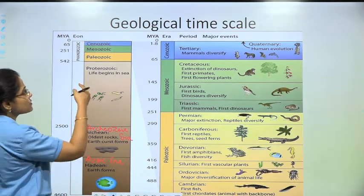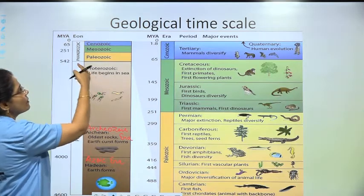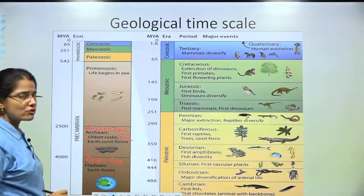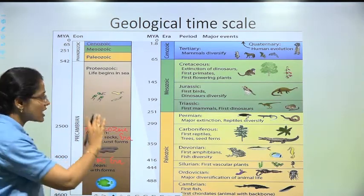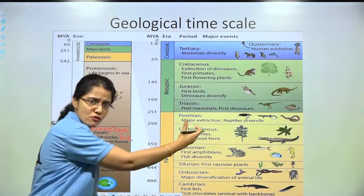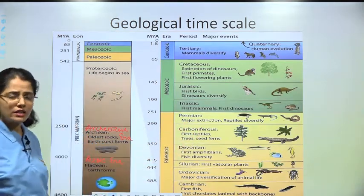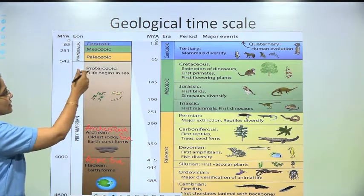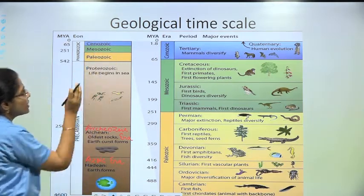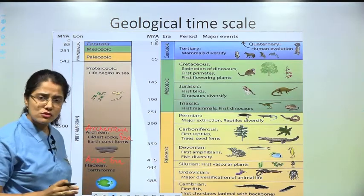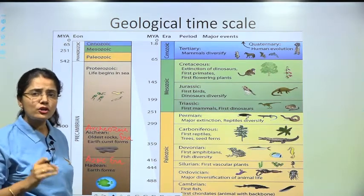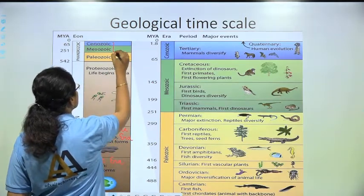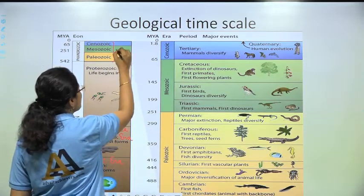Then comes the Proterozoic era, Paleozoic era, Mesozoic era, and Cenozoic era. So the developmental history of earth and the simultaneous formation of organisms can all be divided into six eras. Out of these, the three modern eras are Paleozoic, Mesozoic, and Cenozoic.